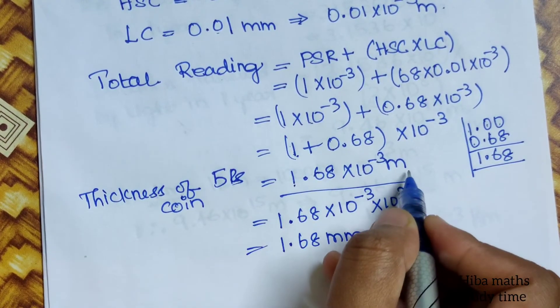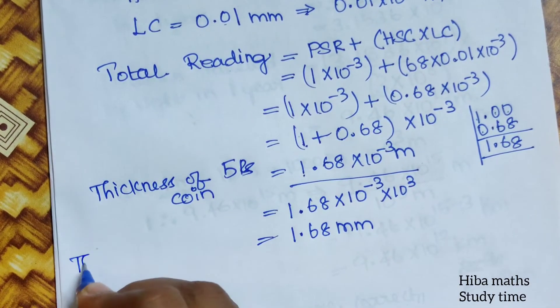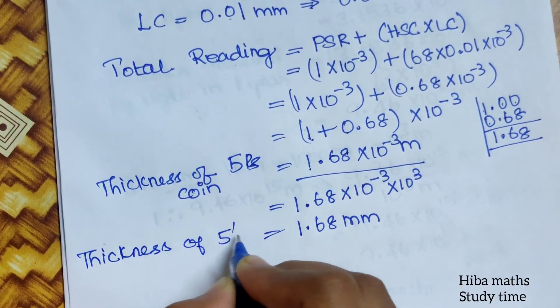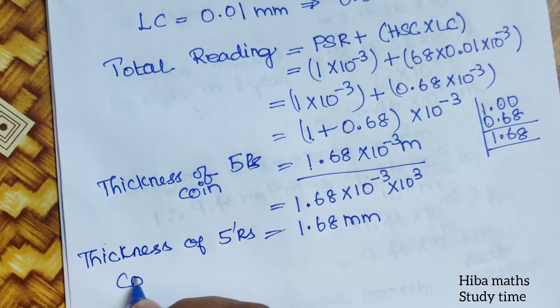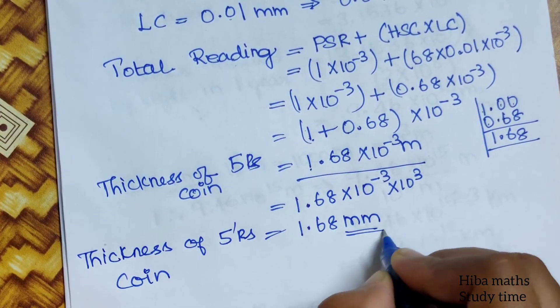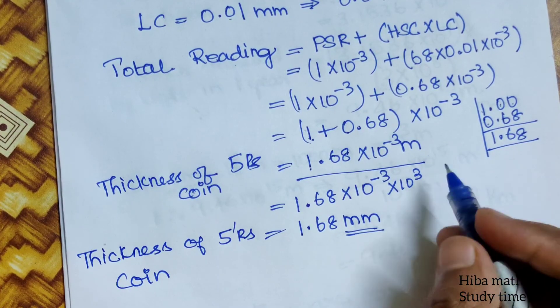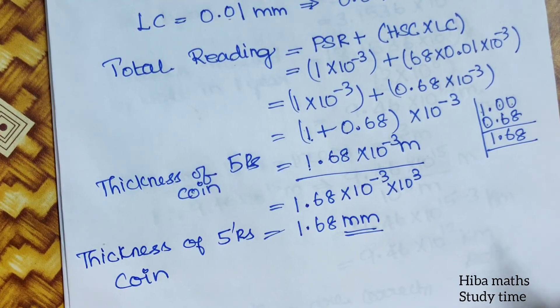5 rupees coin is in meter, that is where it is. Thickness of 5 rupees coin, but in millimeter. Understand? Thank you so much for watching. Bye-bye.